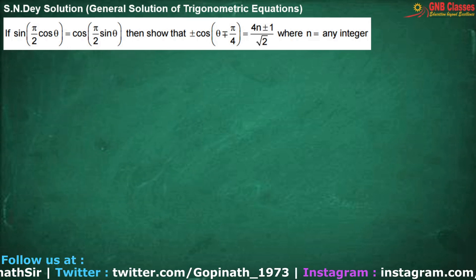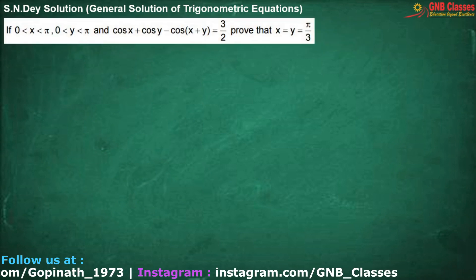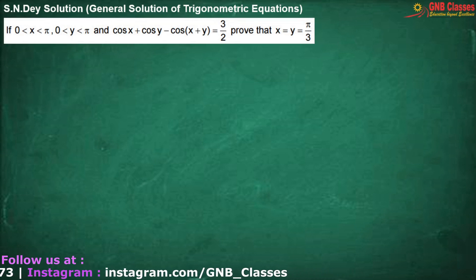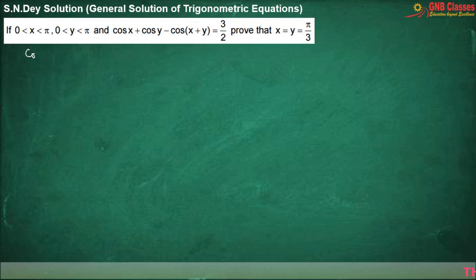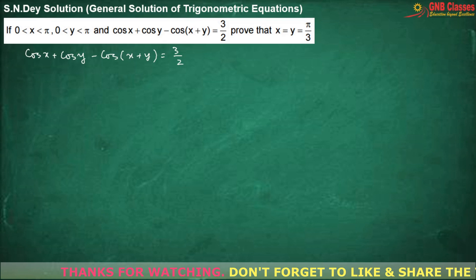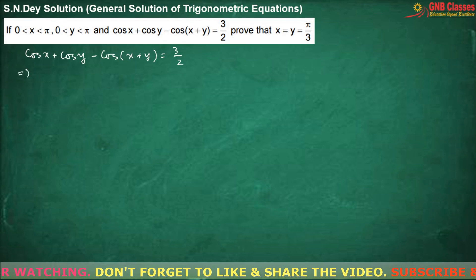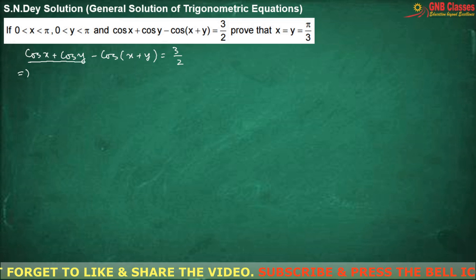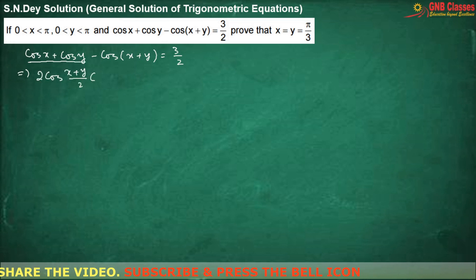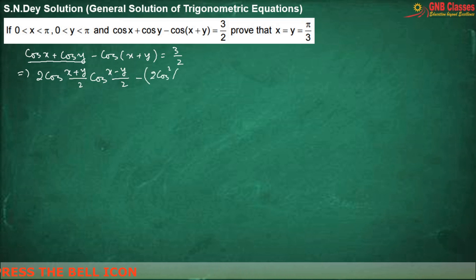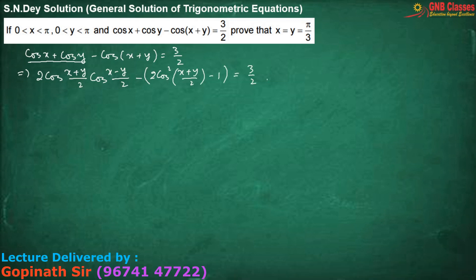Here x is lying from 0 to π and y is also lying from 0 to π, and they have given cos x + cos y - cos(x+y) = 3/2. What I'm doing here is applying the cos C + cos D formula, and cos(x+y) can be written as 2cos²((x+y)/2) - 1.